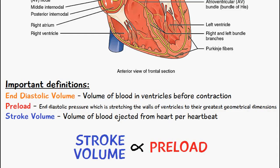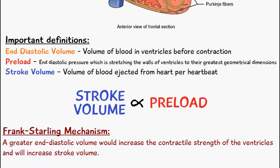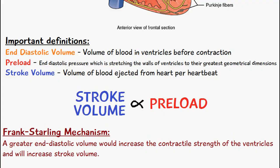So how does this relate to the Frank-Starling mechanism? The Frank-Starling mechanism basically means that an increased amount of blood in the ventricles causes an increase in the contractile strength of the ventricles, and therefore increases stroke volume — the amount of blood ejected from the heart per heartbeat.